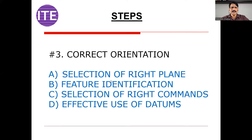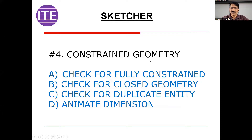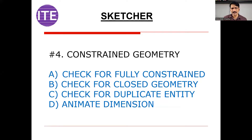So wisely, you have to select datums. Coming to the next part — constraint geometry, very important. When you start your sketcher mode and are using sketching commands, the first thing you have to ensure is that your sketch is fully constrained. In the case of CATIA, there is one tool — sketch analysis — you can use that tool and it will tell you whether your geometry is constrained or not.